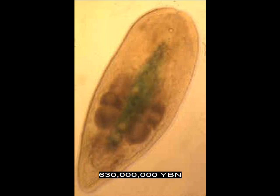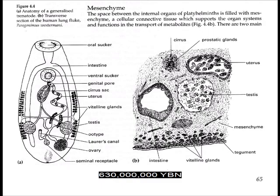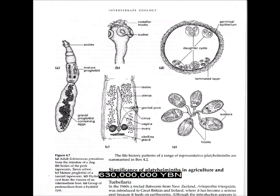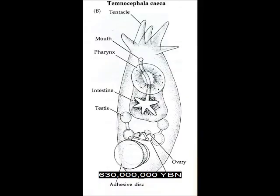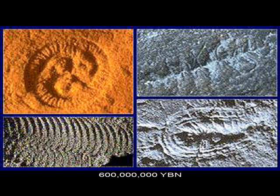Earliest extant bilaterian: Acoelomorpha — acela flatworms and nemertodermatida. Acoelomorpha lack a digestive tract, anus, and coelom. An intestine evolves in a bilaterian. Cylindrical gut, anus, and throughput of food evolves in a bilaterian — found in all bilaterians except acoelomorpha and platyhelminthes. The genital pore, vagina, and uterus evolve in a bilaterian. The penis evolves in a bilaterian. Fluid-filled cavity, the coelom, evolves in a bilaterian. Start of Ediacaran soft-bodied invertebrate fossils. The sudden appearance of Ediacaran fossils may relate to the accumulation of free oxygen in the atmosphere and sea, which may permit an oxidative metabolism.